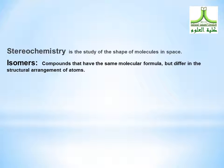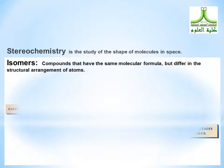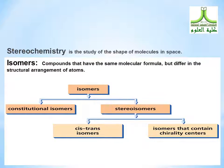Stereochemistry is the study of the shape of molecules in space. Isomers are compounds that have the same molecular formula but differ in the structural arrangement of atoms. Isomers can be divided into constitutional isomers and stereoisomers. Stereoisomers can be divided into cis-trans isomers and isomers that contain chirality centers.